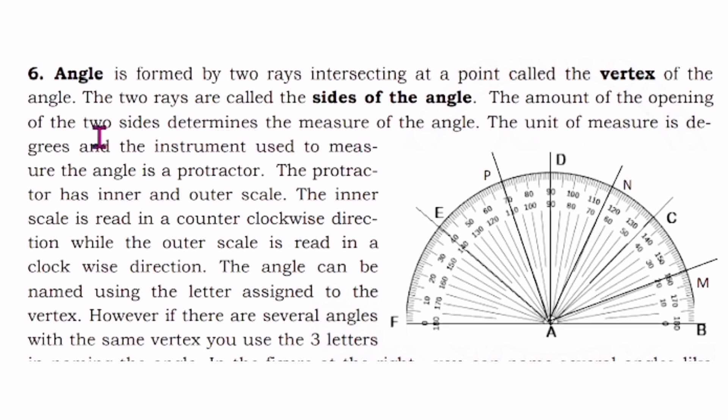The unit of measure is degrees and the instrument used to measure the angle is a protractor. The protractor has inner and outer scale. The inner scale is read in a counterclockwise direction, while the outer scale is read in a clockwise direction.